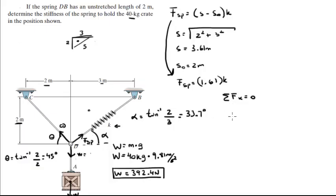The sum of forces in the x direction equals 0. Going to the left, we have minus F_CD times the cosine of 45 degrees—I'm sorry, it's the cosine, not the sine, but cosine of 45 and sine of 45 are the same—plus the force of the spring times the cosine of 33.7 degrees, and that equals 0.